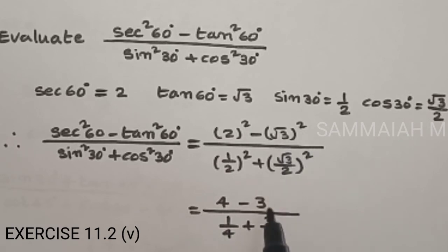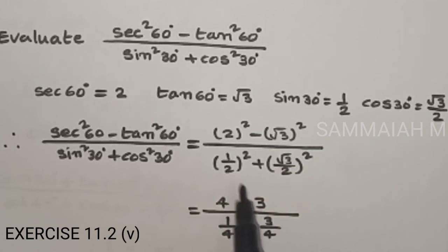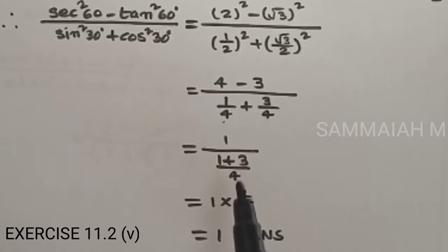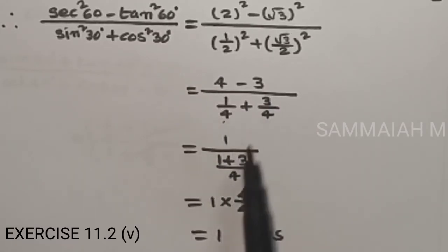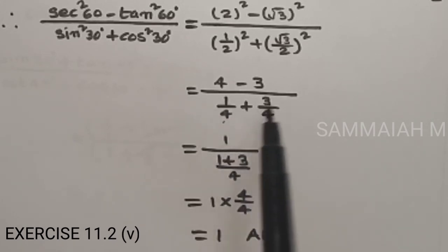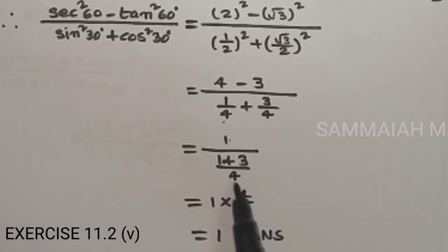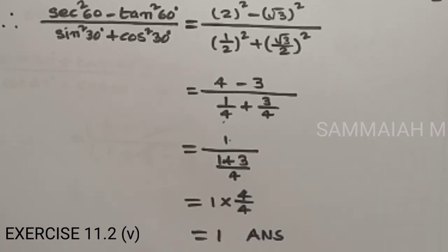2 squared is 4, root 3 squared is 3, so numerator is 4 minus 3 equals 1. In the denominator, LCM is 4: 1 by 2 squared is 1 by 4 and root 3 by 2 squared is 3 by 4, so numerator is 1 plus 3 equals 4, giving 4 by 4. Taking reciprocal, we get 1 upon 4 by 4 which equals 1 into 1, so the answer is 1.